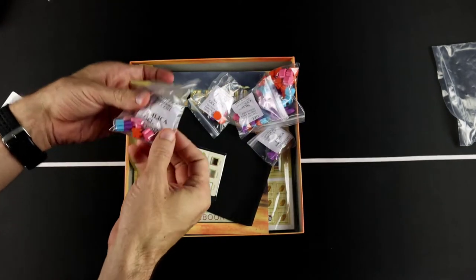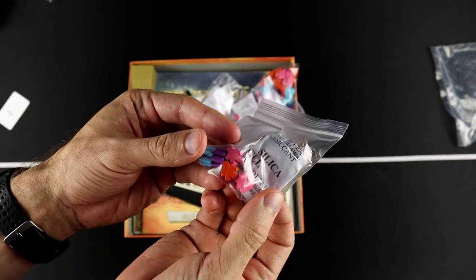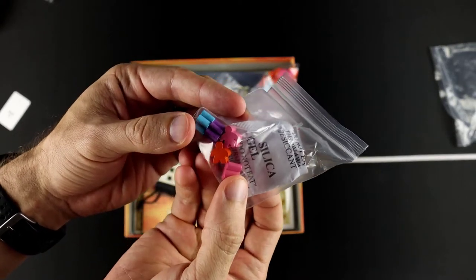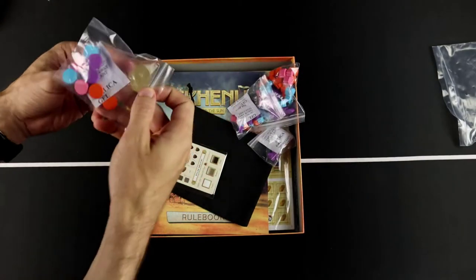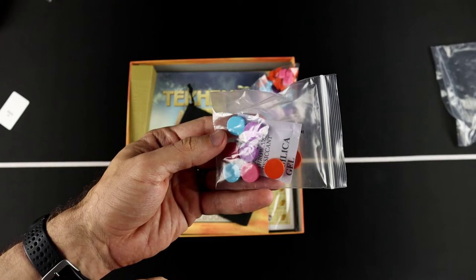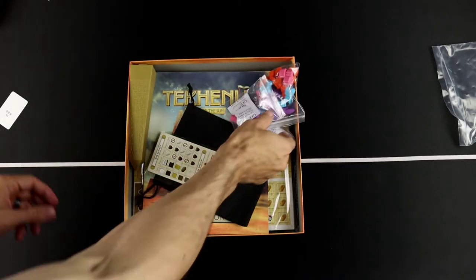And then we've got some little baby meeples, it looks like. Some very tiny, tiny meeples there. Oh, they're so cute. All right, and then looks like maybe some score markers or something like that in that bag.